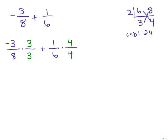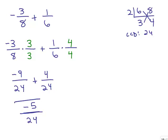In the numerator I have negative 3 times 3, so that's negative 9/24, plus 4/24. After getting a common denominator, I use the rule for adding fractions: write the denominator down and add the numerators. So the numerators are negative 9 plus 4. The answer is negative 5/24, because there are more negatives than positives — when you add different signs you take their difference. So we've done negative 3/8 plus 1/6.